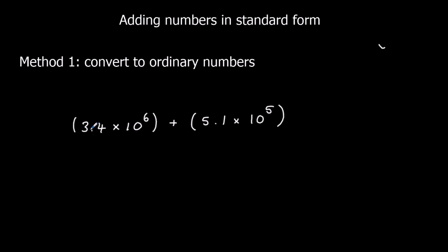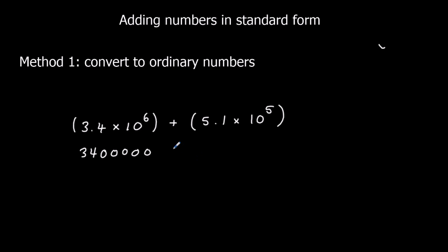So here we've got 3.4 times 10 to the power of 6. That means 3.4 times 10, six times. We times it by 10 once to get to 34, and then we times it by 10 five more times. So this is 3.4 times 10 to the power of 6.